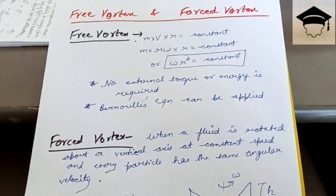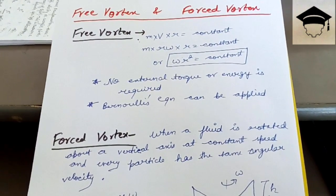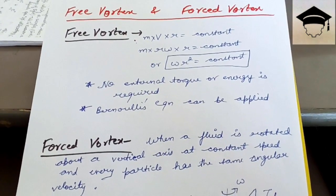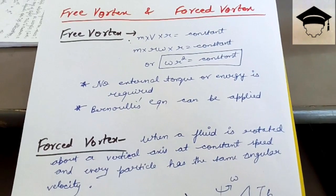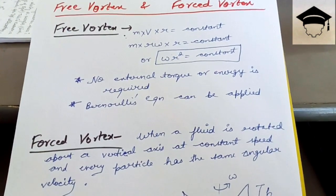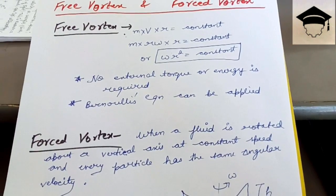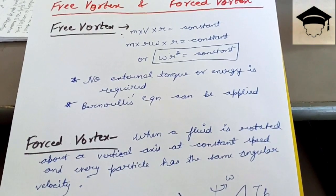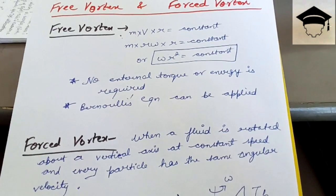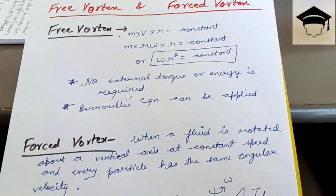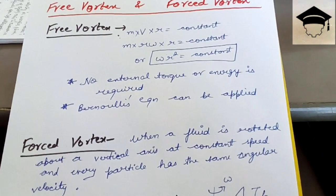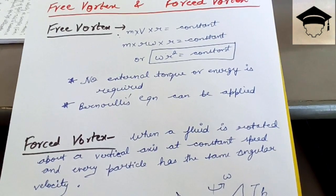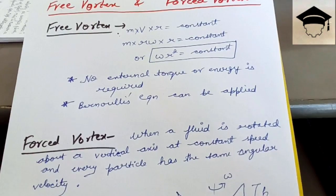Hello guys and welcome to my channel. In this video I will be explaining free vortex and forced vortex flow, which is an important topic in fluid mechanics. Free vortex flow means that the fluid requires no energy or external torque — the fluid can flow by itself, just like a whirlpool. For example, when you drain a washing machine, that spiral motion of the fluid towards the center is free vortex flow.